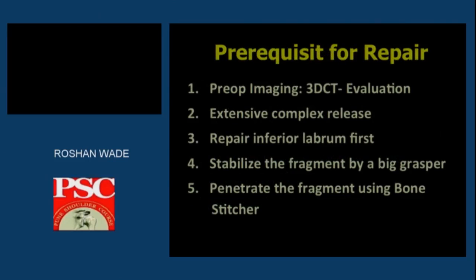The most important prerequisite is a 3D CT scan evaluation of the shoulder joint to analyze humeral head bone loss (Hill-Sachs lesion) as well as glenoid bone loss. This has been described by Aguiloi, Steve Burkhart, and the Giovanni group as on-track and off-track lesions. If you have an off-track lesion, arthroscopic repair is difficult and a Latarjet procedure is required. Extensive capsular release is required to mobilize the fragment back to the glenoid, and repair of the labrum first allows the glenoid fragment to be pulled up.